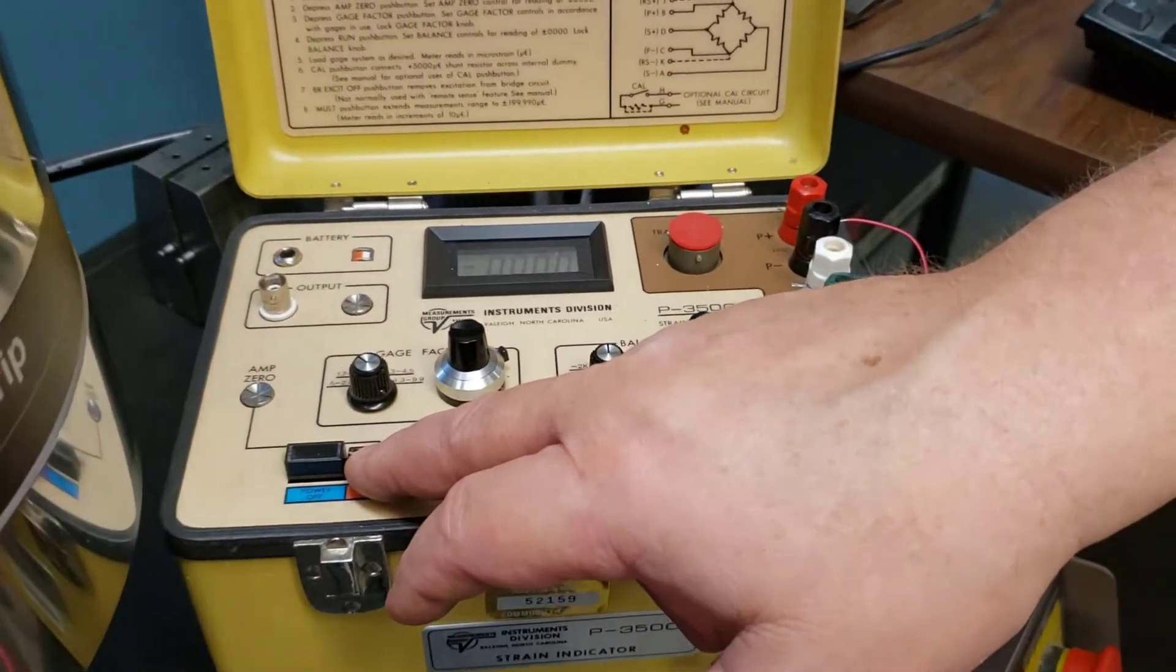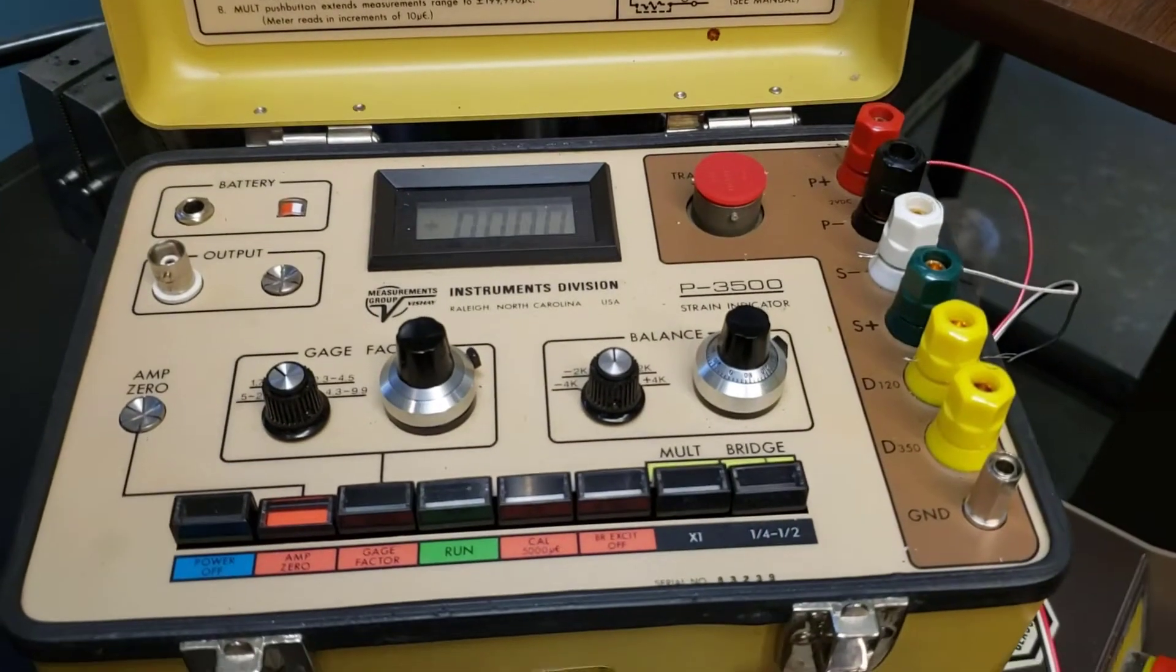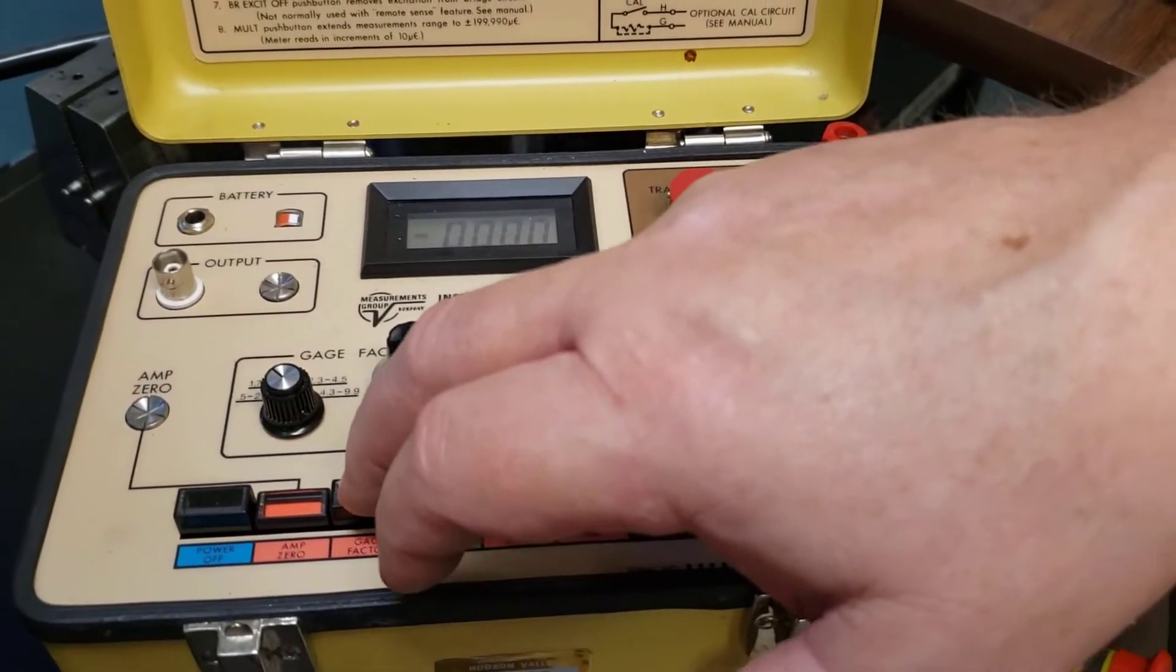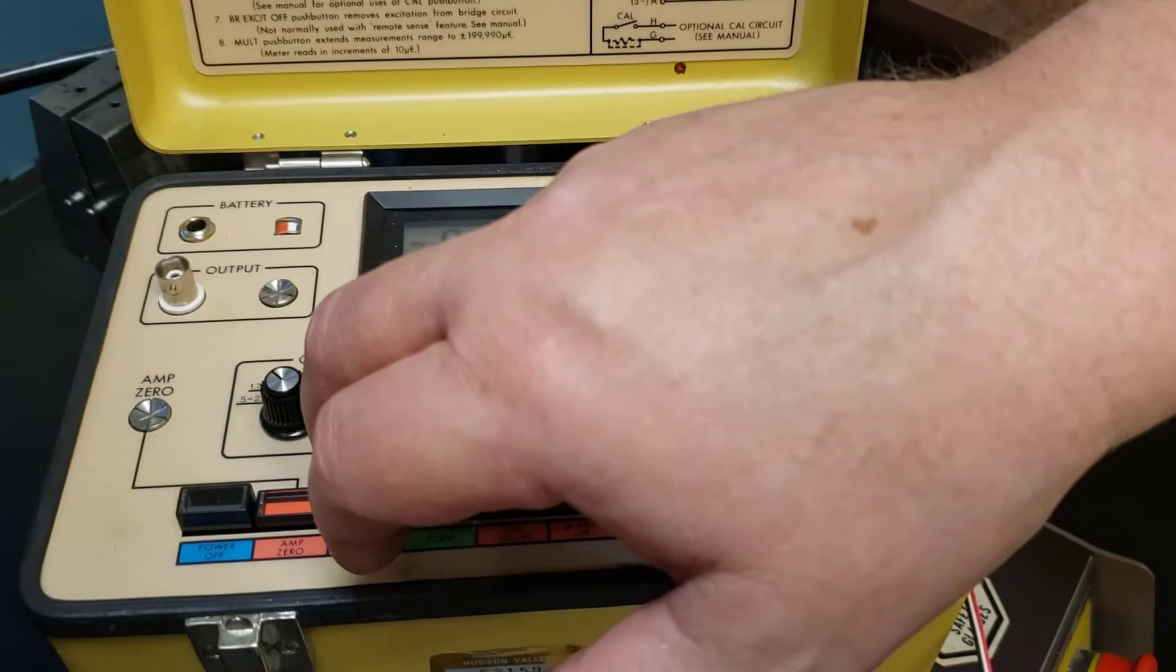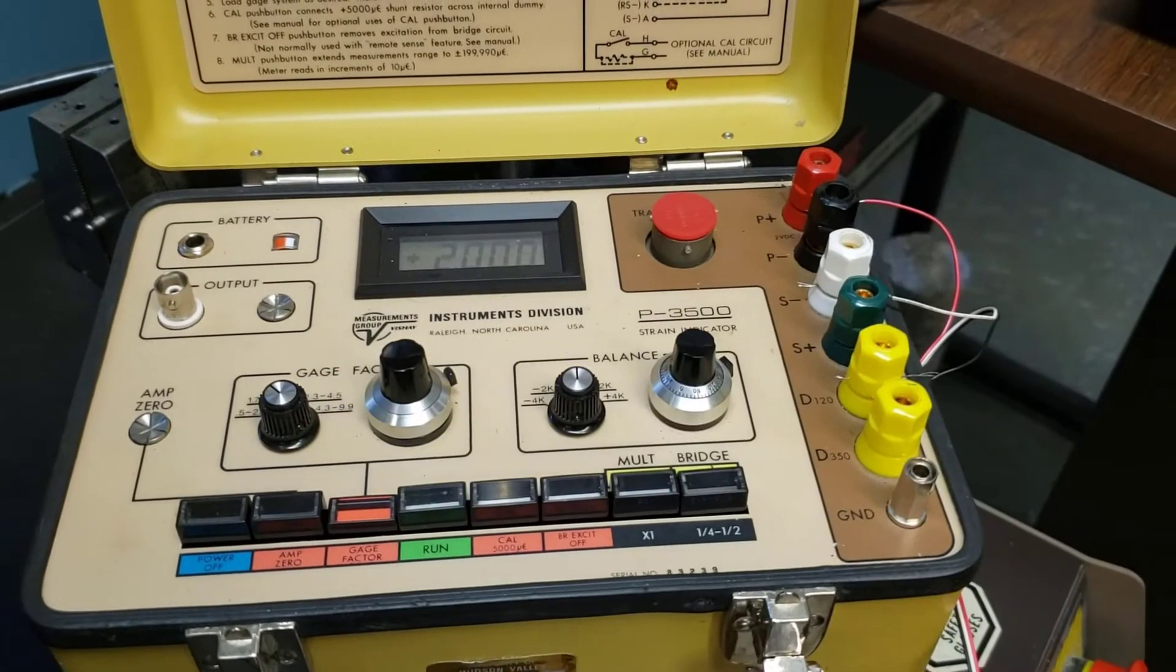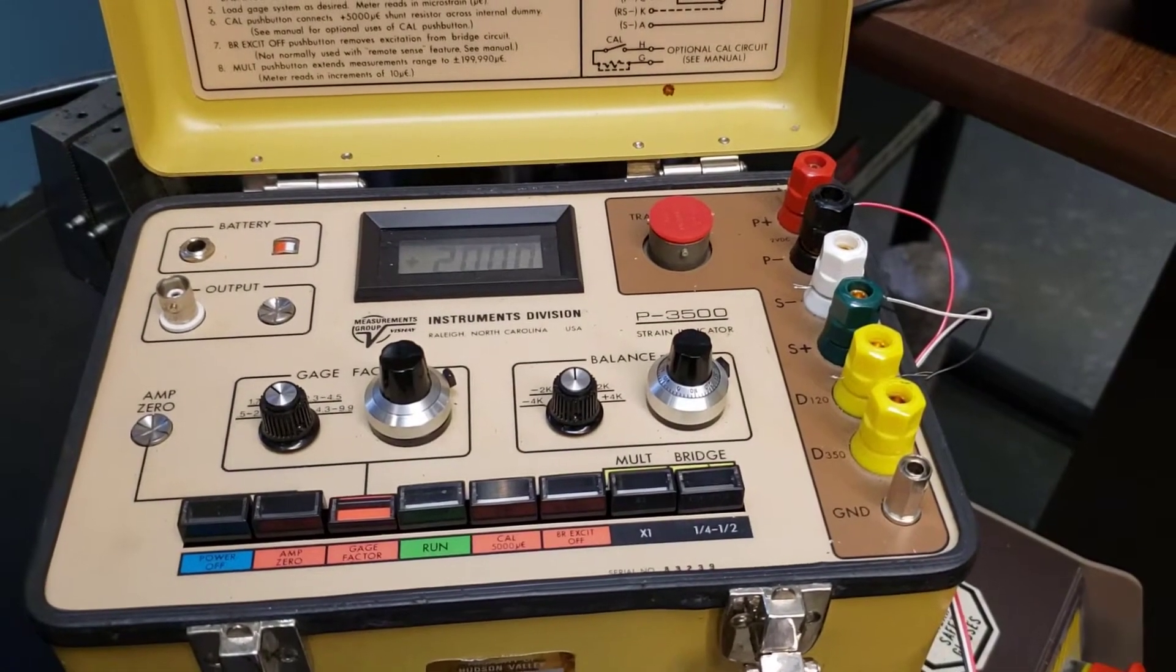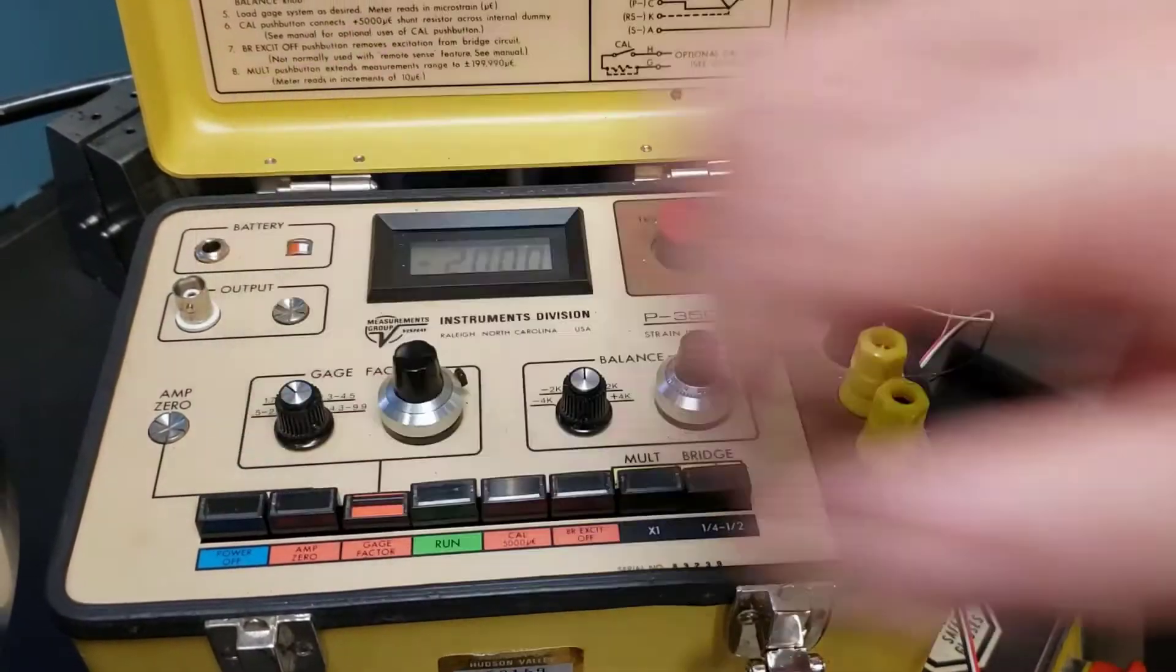We hit the amp and zero out the amperage. The gauge factor is the resistance of the strain gauge. It's normally around 2 or 1.99.